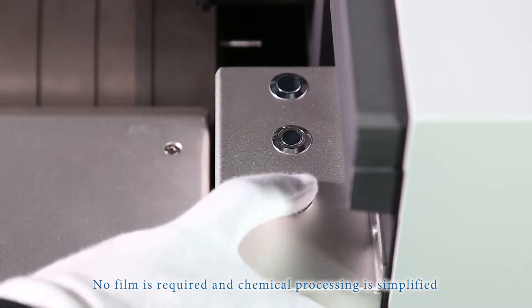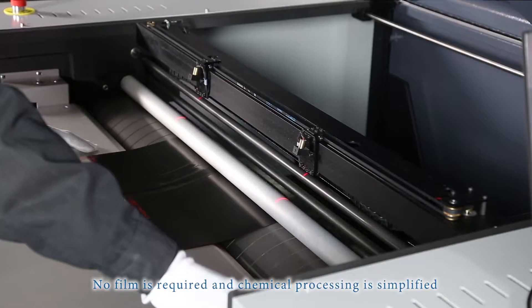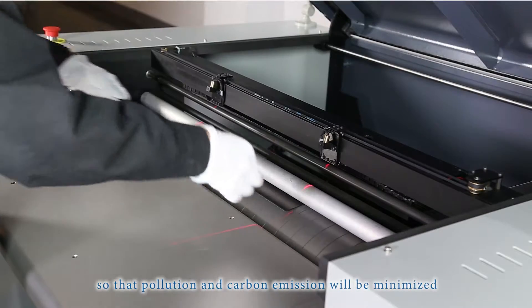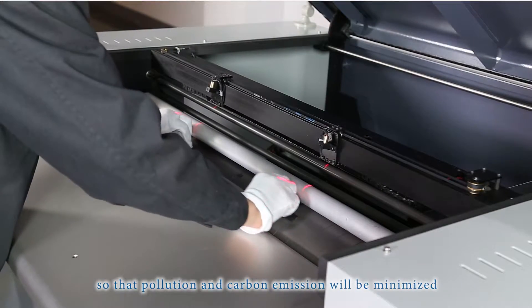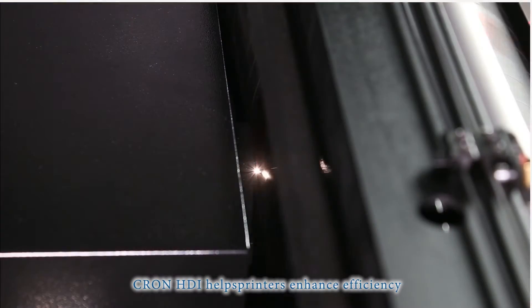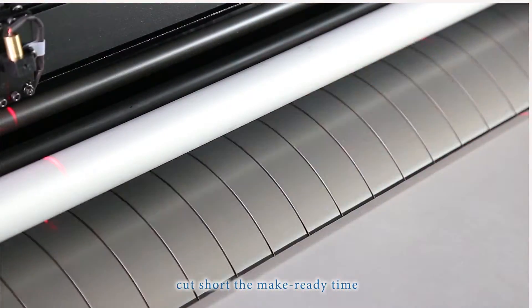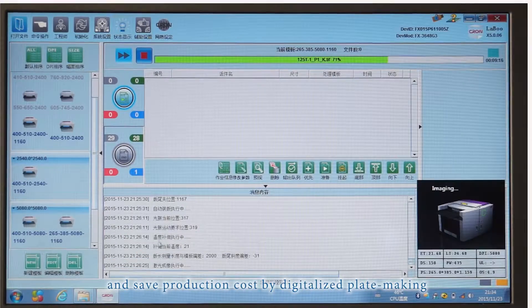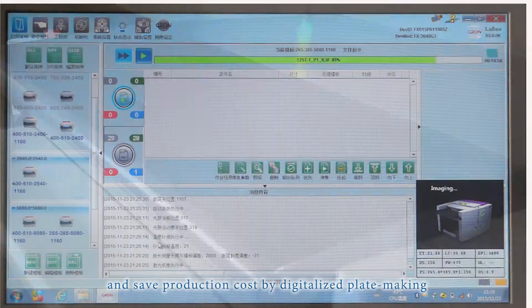No film is required and chemical processing is simplified so that pollution and carbon emission will be minimized. Crone HDI helps printers enhance efficiency, cut short the make ready time and save production cost by digitalized plate making.